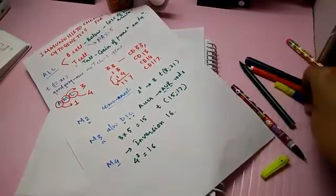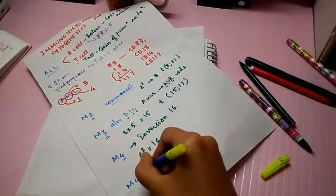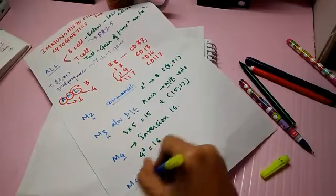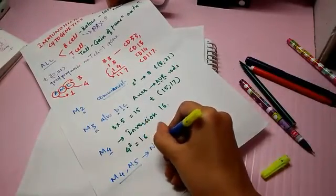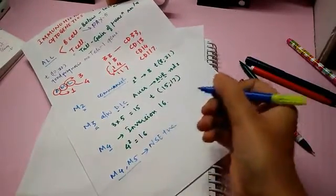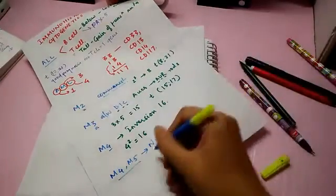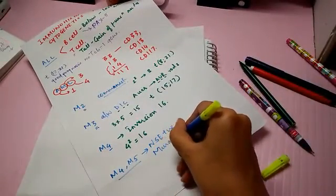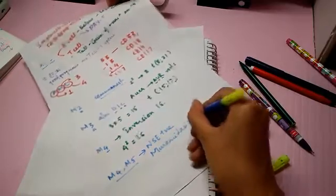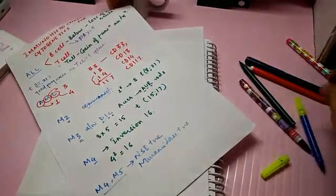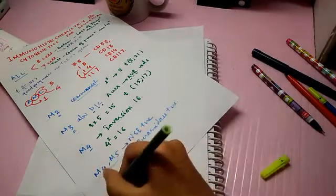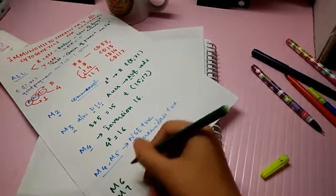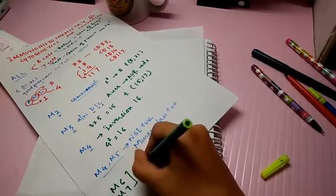Then, we move on to AML M4 and M5 together for the stains. I don't have a mnemonic for this but you can remember the stains like NSE positive and it's non-specific esterase, and Muramidase is positive. And for AML M6, M7, you can remember they are PAS positive.